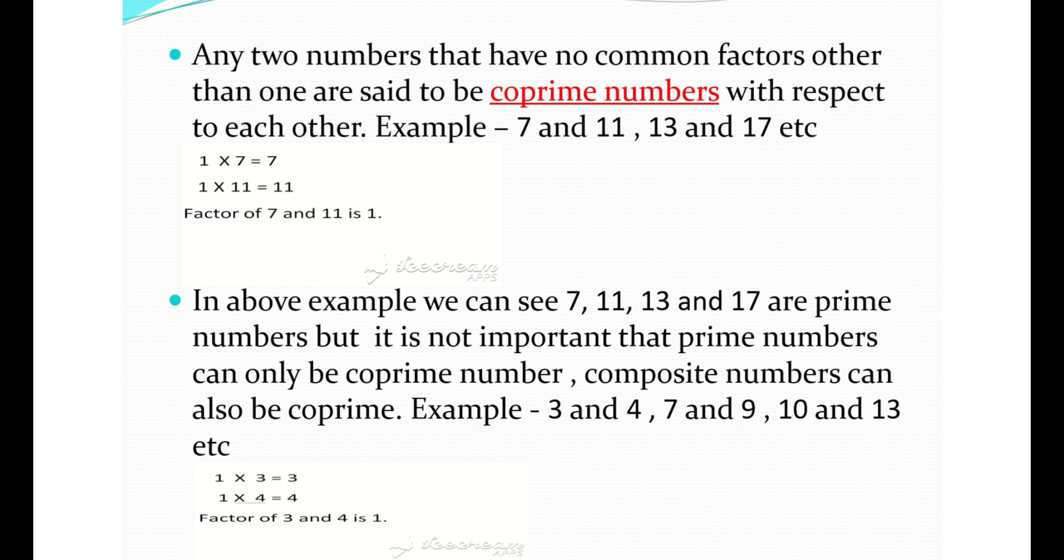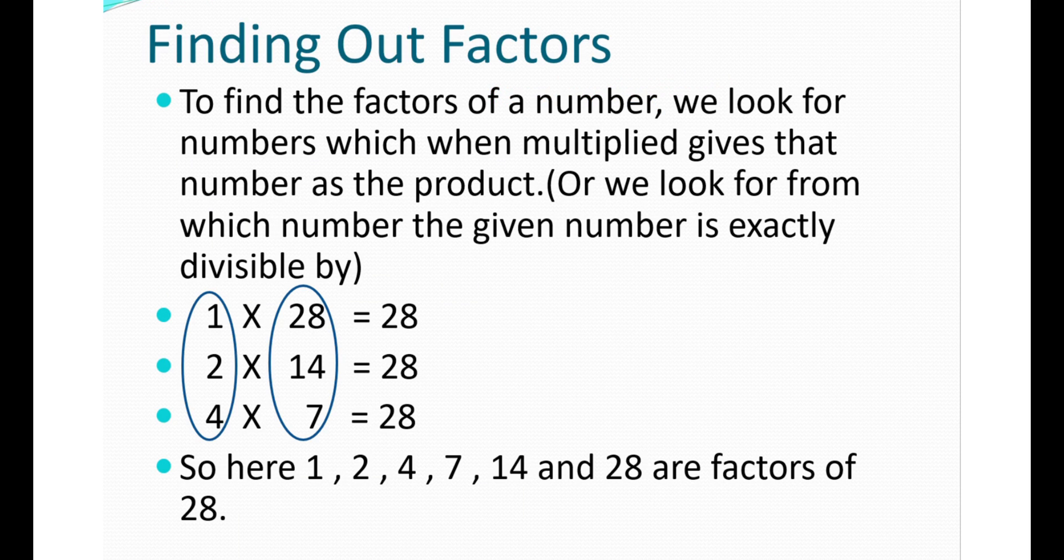Finding out factors: To find the factors of a number, we look for numbers which when multiplied give us that number as the product, or we look for which number the given number is exactly divisible by. Let's find out the factors of 28. The factors of 28 are 1, 2, 4, 7, 14, and 28.